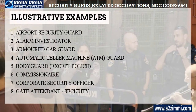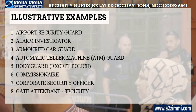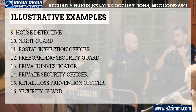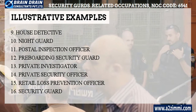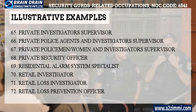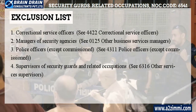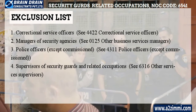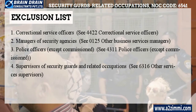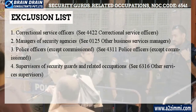Illustrative titles for security guards and related security service occupations include: airport security guard, alarm investigator, armored car guard, automatic teller machine (ATM) guard, and many more. The list is quite large, so you can pause this video to read all the alternative profile titles. Exclusions: correctional service officers (see 4422), managers of security agencies (see 0125 Other business services managers), police officers except commissioned (see 4311), and supervisors of security guards and related occupations (see 6316 Other services supervisors).